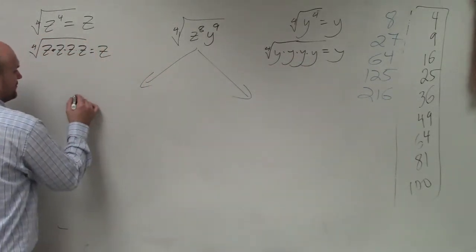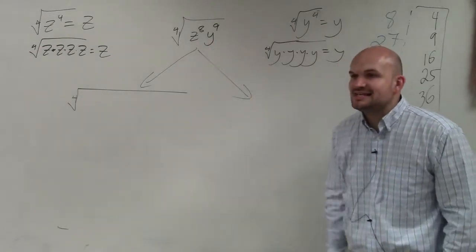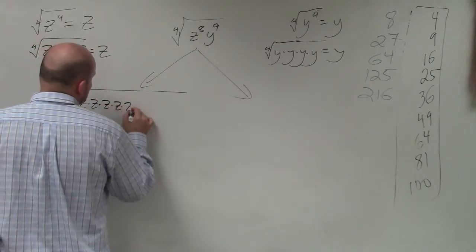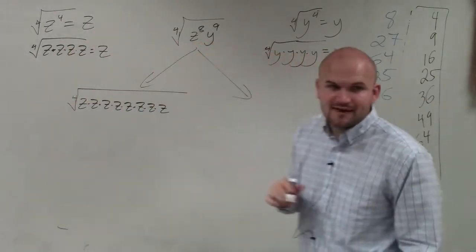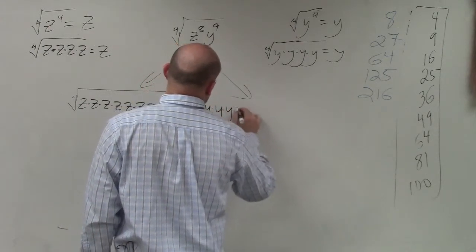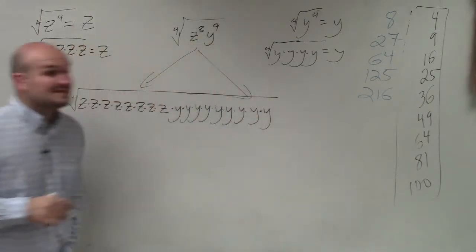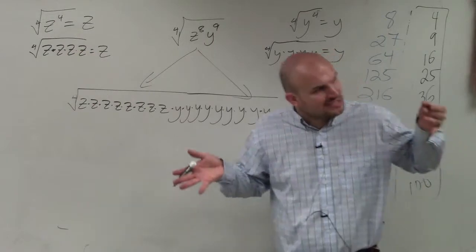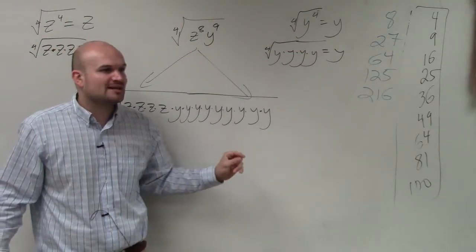The first way I showed you how to do this was to break it down. How can I rewrite z to the eighth? You can rewrite z to the eighth as z times z times z times z times z times z times z times z — eight times. And then you'd also rewrite y to the ninth as y times y times y times y times y times y times y times y times y — nine times. So yes, this is the longer way to do it, but it's definitely possible. What's nice about this, which a lot of students like, is it's very visual. You are rewriting z to the eighth as z multiplied by itself eight times, and y to the ninth as y multiplied by itself nine times.